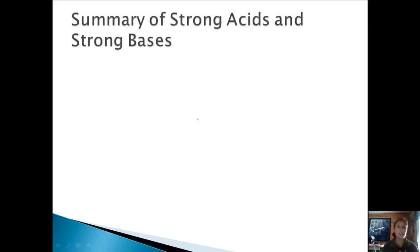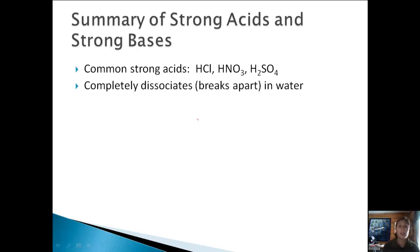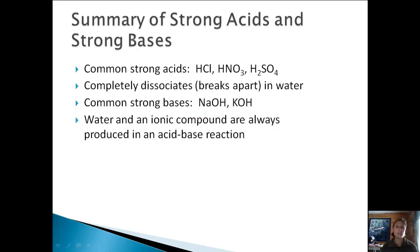Okay, we talked about how there could be strong acids and weak acids, and the same thing with bases. So there aren't a ton of strong acids and bases. It's good to know the few strong ones because then basically everything else is weak. Some common strong acids are hydrochloric acid, nitric acid, and sulfuric acid. Because they're strong, like we talked about, they completely dissociate or break apart in water into their ions—so into the H+ and then the anion, whatever that is, either Cl-, NO3-, or SO4 2-. Common strong bases are sodium hydroxide and potassium hydroxide. So it can have a hydroxide, but that doesn't mean it's a strong base. Remember we can also have weak bases, and these strong ones will completely dissociate. And remember, water and an ionic compound are always produced in an acid-base reaction.